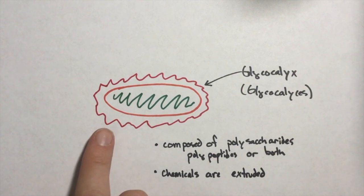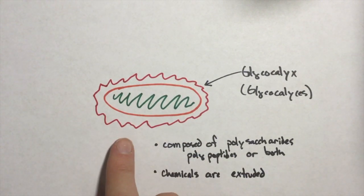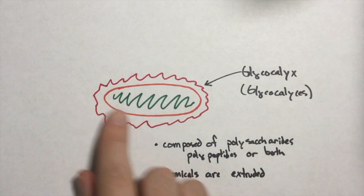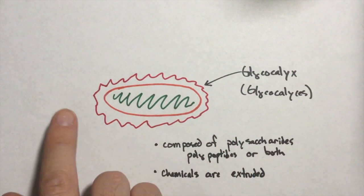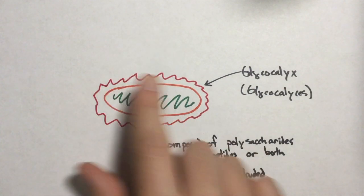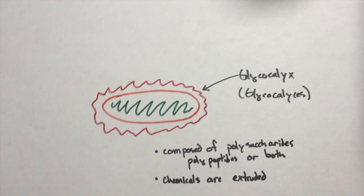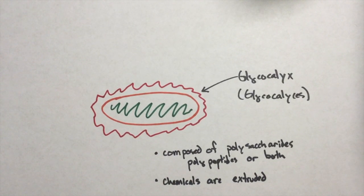And these chemicals that compose the glycocalyx are extruded through the cell. And if you look at it under a microscope, it'll look like your average bacteria, like a rod or something with this sort of slime covering all around it. So that's essentially what this bacterial structure is.